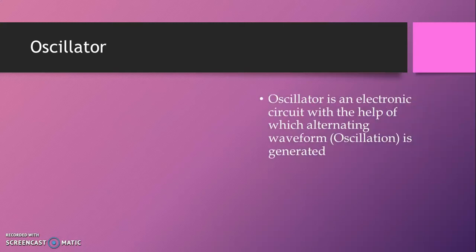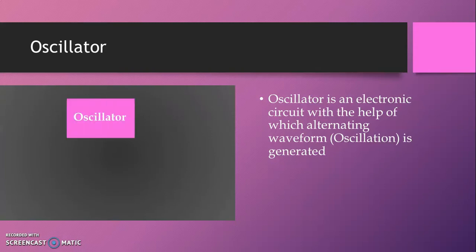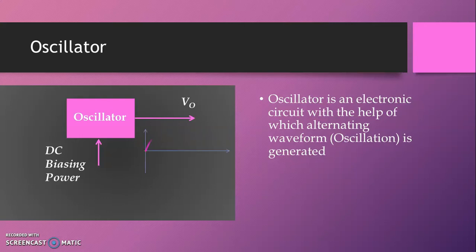An oscillator is an electronic circuit with the help of which alternating waveform oscillations are generated. The oscillator acts as an amplifier and the output we get is VO, a sinusoidal output waveform with a certain frequency and sustained oscillations. It requires DC power for biasing purposes, and the output is available at the output terminal.